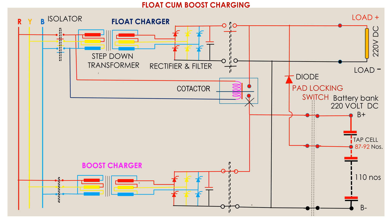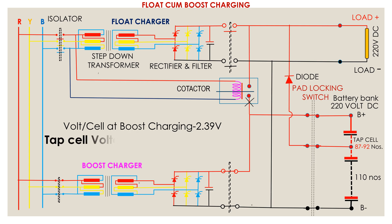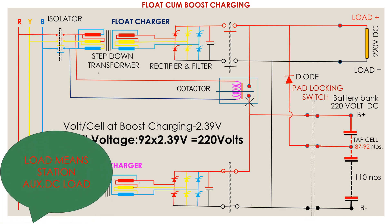Therefore, a number of battery cells are excluded from the external load circuit to avoid such damage — that is, a number of cells are included to allow proper operating voltage to the instrument coils. This is called a tap cell. The number of tap cells depends on the boost charging voltage as per the requirement of the supplier or makers of the battery cells. For example, if the charging voltage per cell becomes 2.39 volts, then the number of tap cells would be 92, as 92 multiplied by 2.39 volts equals 220 volts.